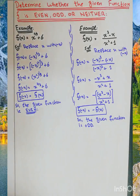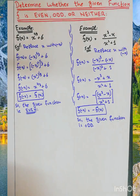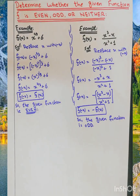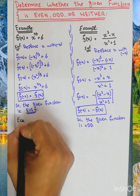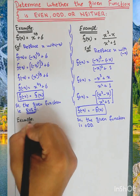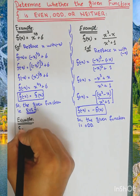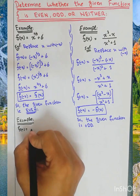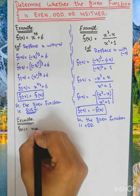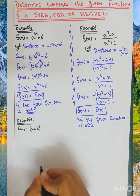We will solve one more example. f of x is equal to x plus 2, whole square.